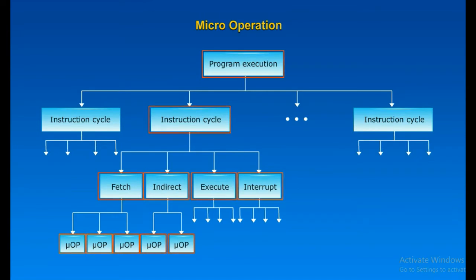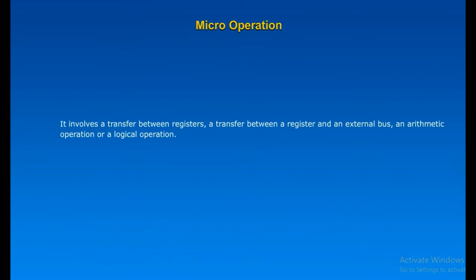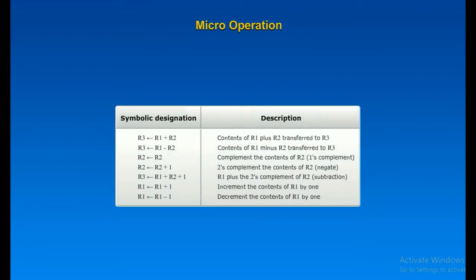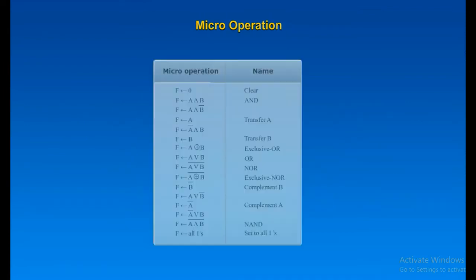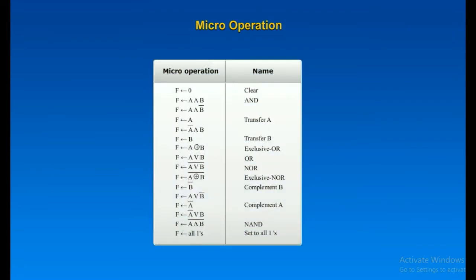Just like we have categories in machine instructions, we have categories in micro-operations too. There are data transfer micro-operations, arithmetic micro-operations, logical micro-operations, and shift micro-operations. All these micro-operations may involve a transfer between registers, a transfer between a register and an external bus, an arithmetic operation, or a logical operation.